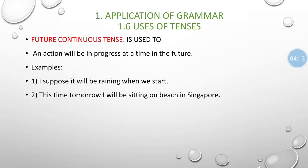Future continuous tense: the action will continue in the future but remain incomplete. When dealing with an action that will be in progress at a point in future. For example: 'I suppose it will be raining when we start.' 'This time tomorrow I will be sitting on a beach in Singapore.' We assume this will be happening at that future time.